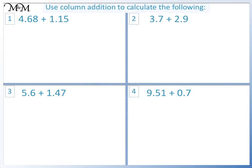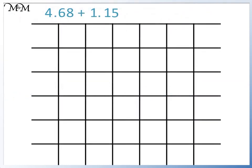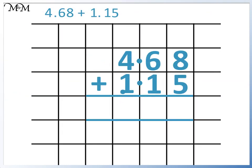Here are some questions for you to try. Pause the video now and have a go. Question 1: 4.68 plus 1.15. 8 plus 5 equals 13. 6 plus 1 equals 7, plus 1 equals 8. 4 plus 1 equals 5. So the answer is 5.83.